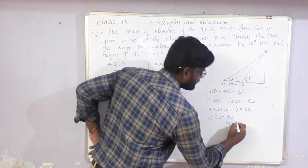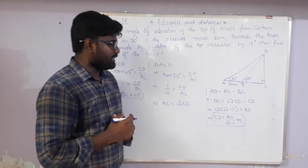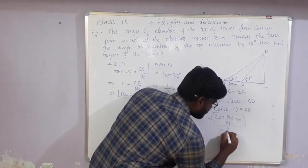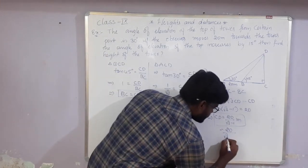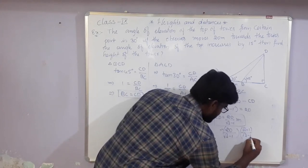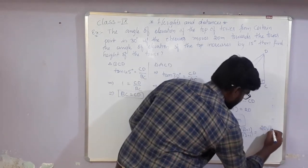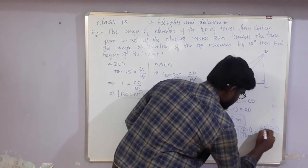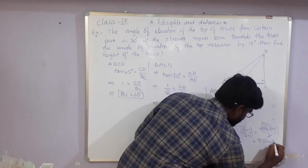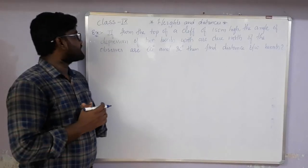CD = 20 / (√3 - 1) meters. Since the denominator is irrational, we rationalize by multiplying numerator and denominator by (√3 + 1). We get 20(√3 + 1) / (3 - 1) = 20(√3 + 1) / 2 = 10(√3 + 1) meters. So the height of the tower is 10(√3 + 1) meters.